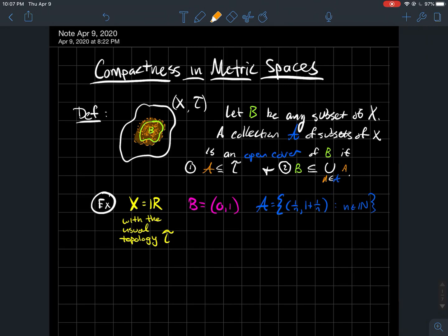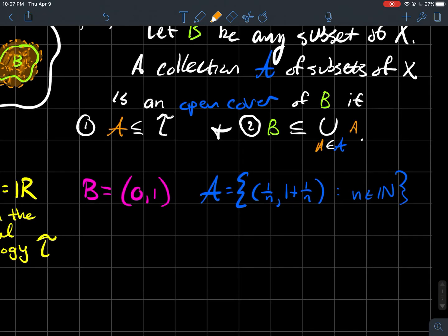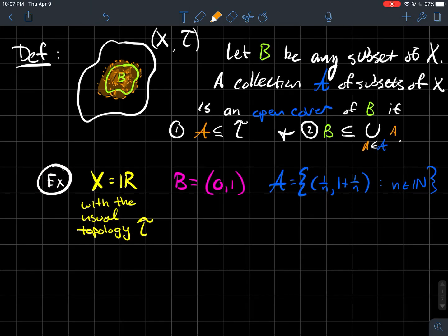Let's take B to be the interval from zero to one. And let's let fancy A be the collection of all open intervals where the left endpoint is one over N and the right endpoint is one plus one over N.